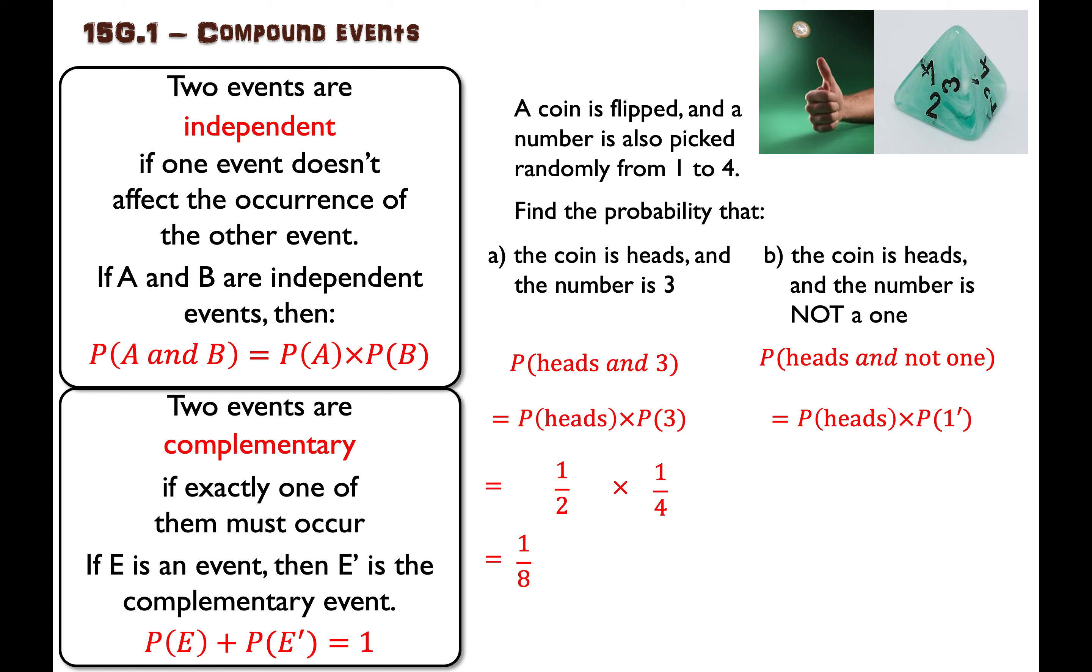To figure out the chance of not getting a one. Well, the chance of getting a heads is easy. That's one over two. The chance of not getting a one. The outcomes for the die are one, two, three and four.